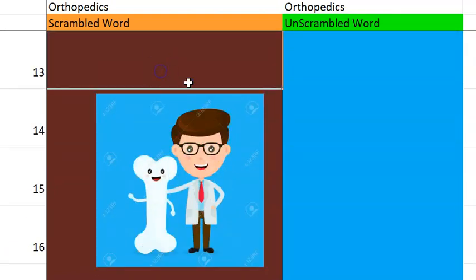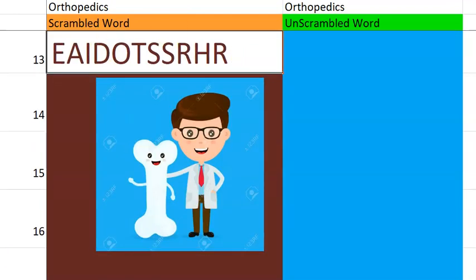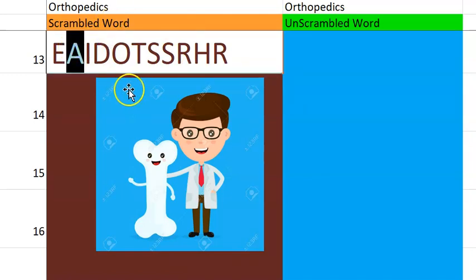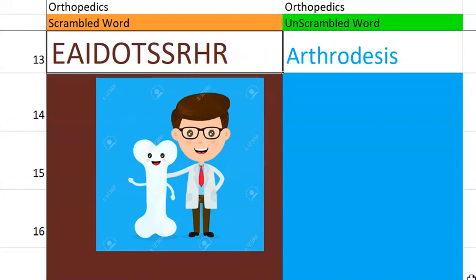Now let's go to the thirteenth one. What do you think this one is? It begins with A, something to do with the joint. Arthrodesis — means you are joining the joint, you are kind of limiting the movement. It's a fusion of two or more bones in a joint. Basically you will do this when there is severe pain, etc. Arthrodesis.